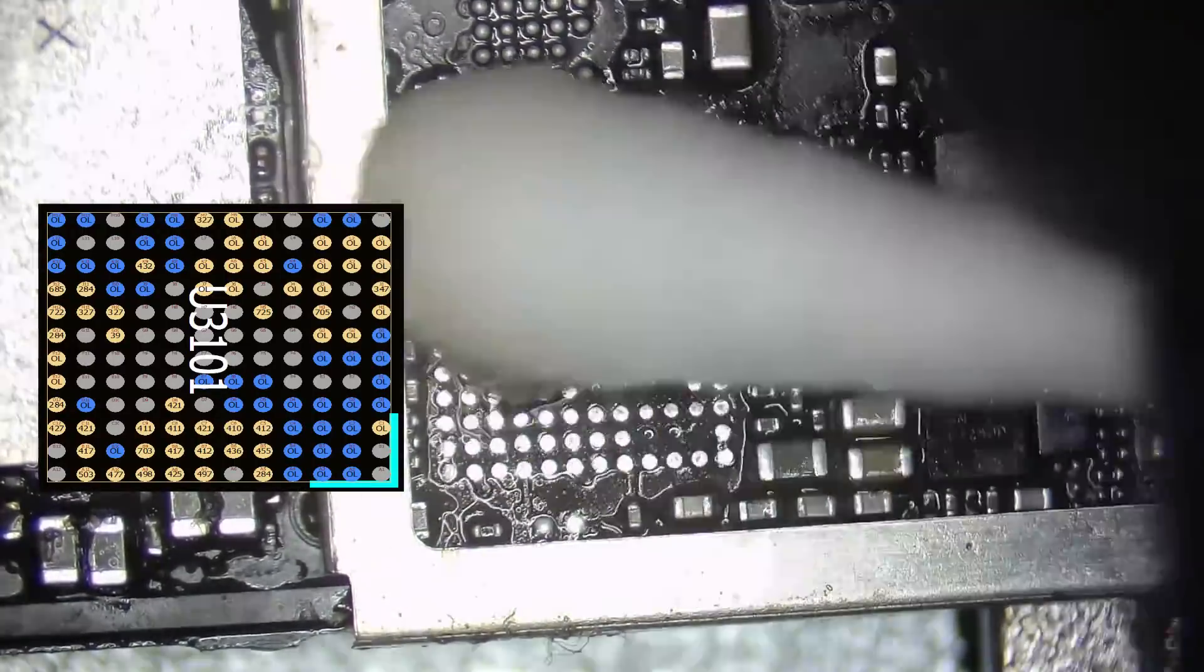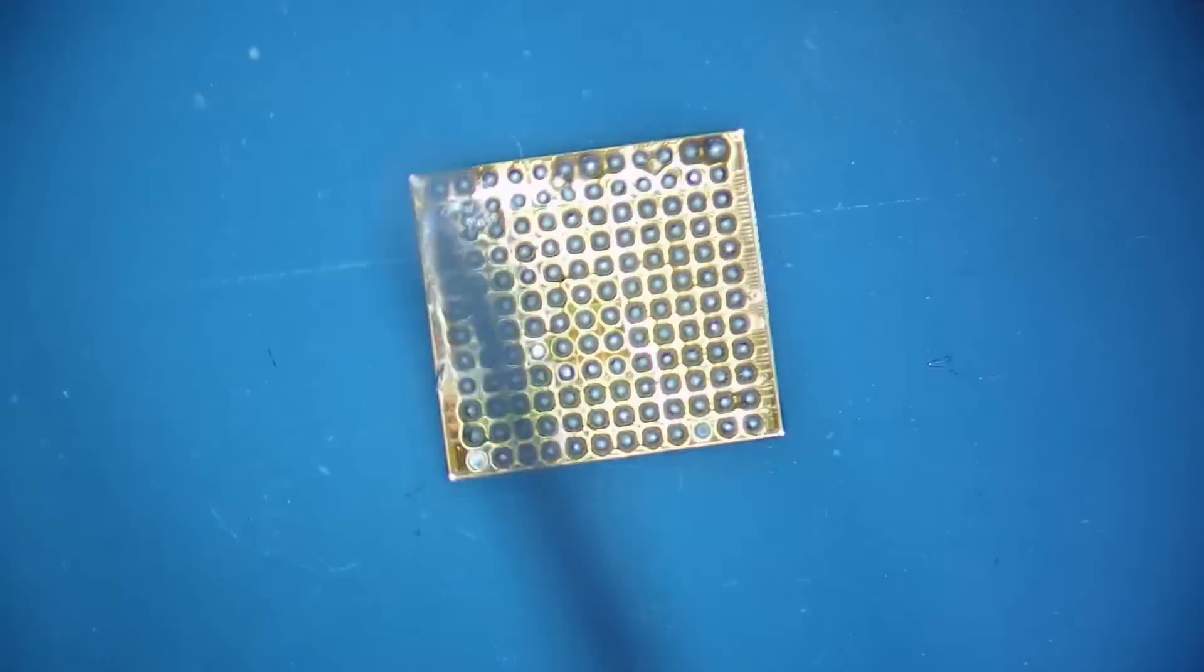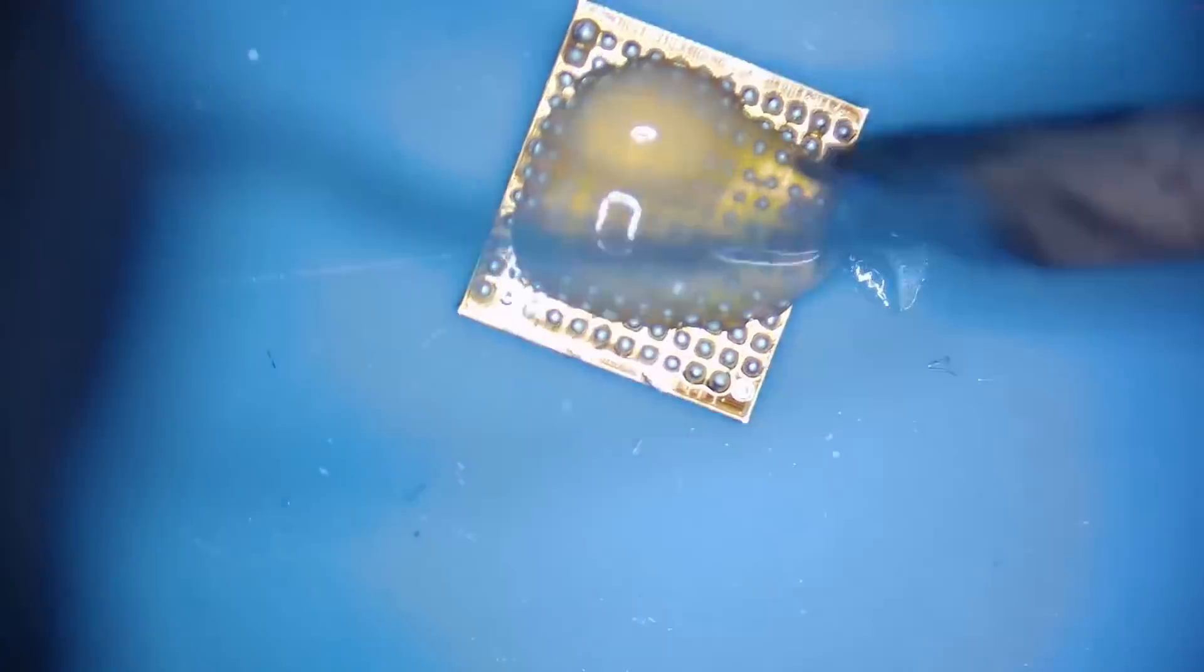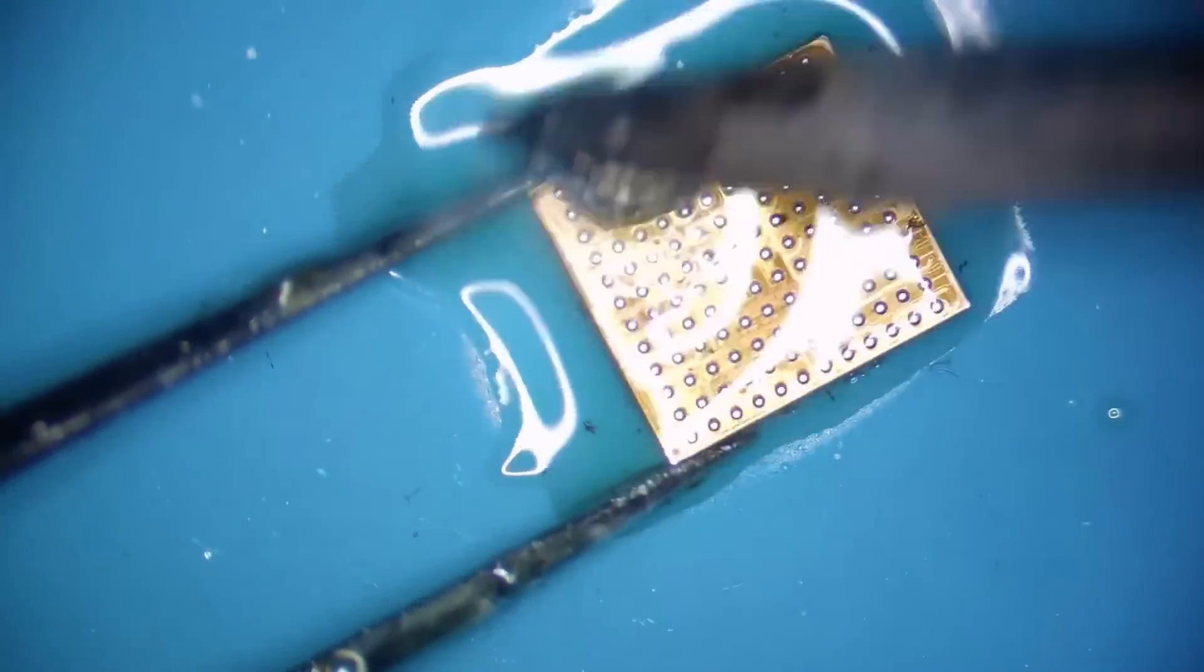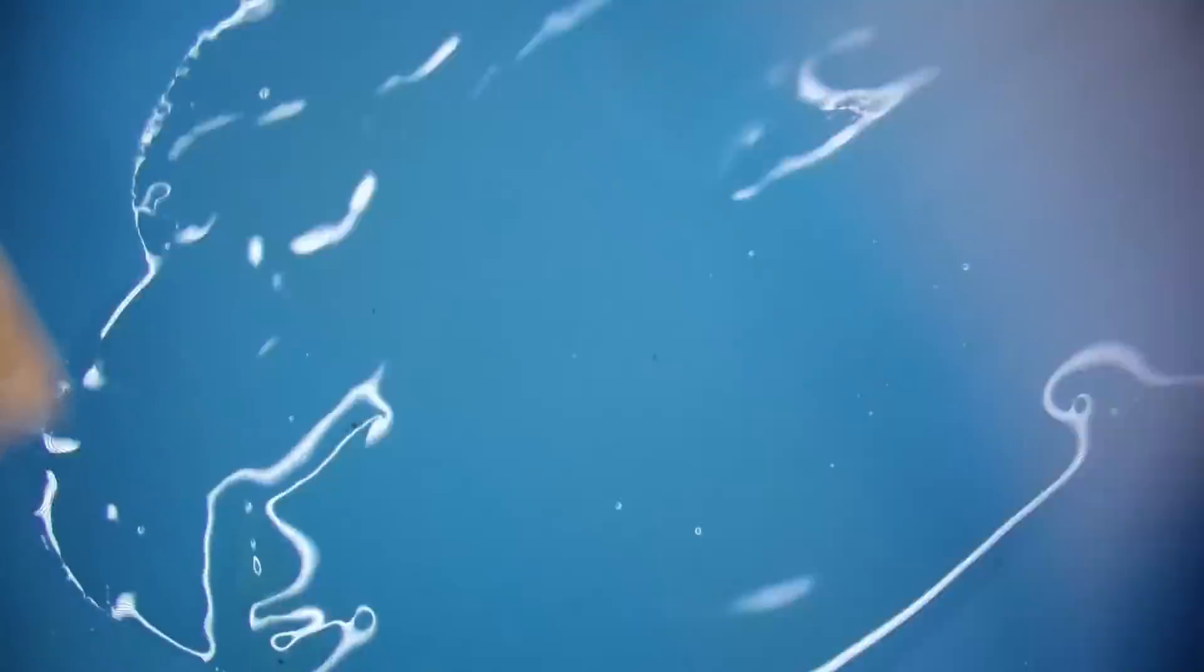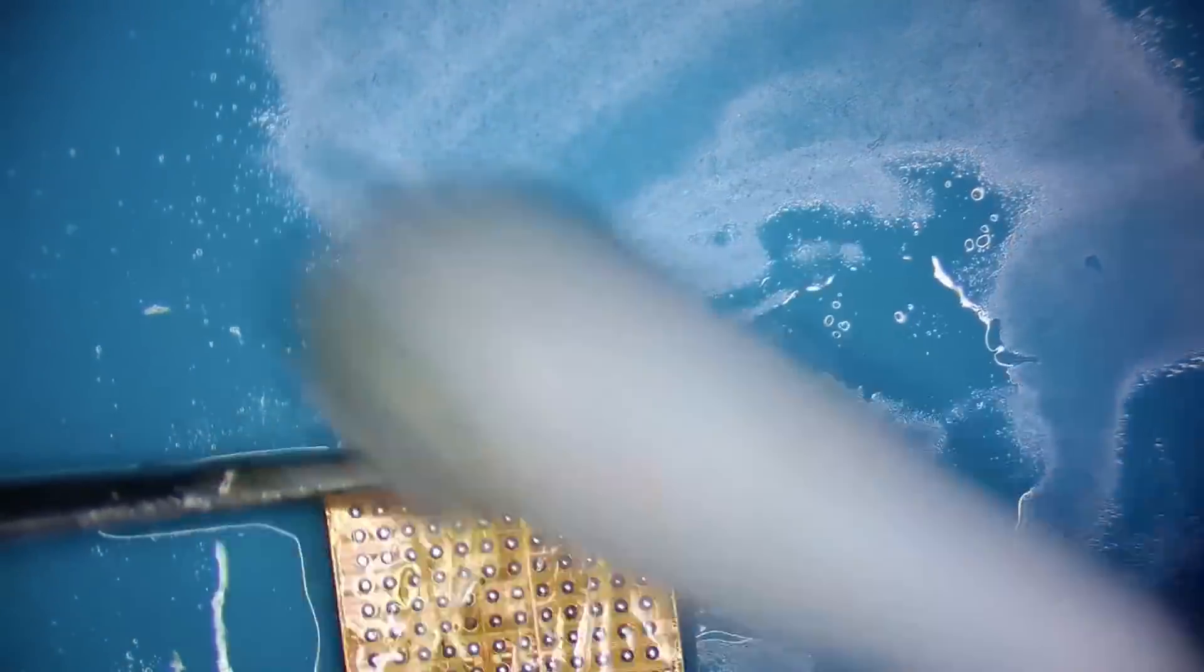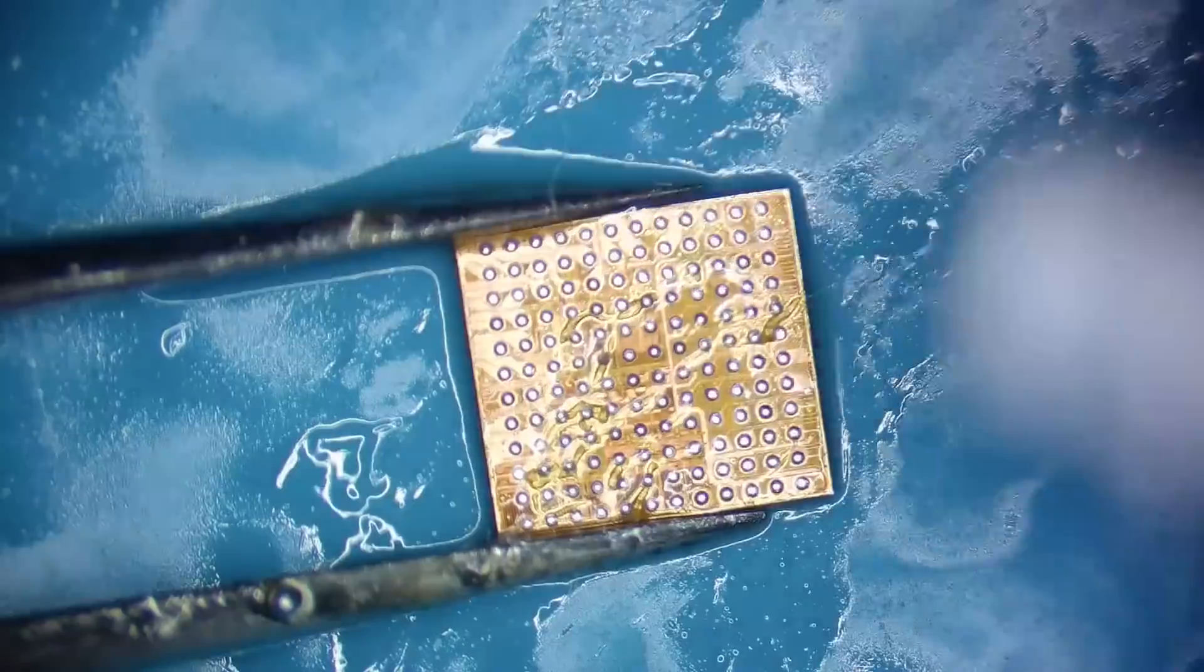Lastly, we clean the board from the flux residue. Now we need to prepare the audio IC for soldering by first applying some flux and going over the pads on its surface with a soldering iron set to 380 degrees C and a leaded solder blob to remove the remains of its original solder balls.